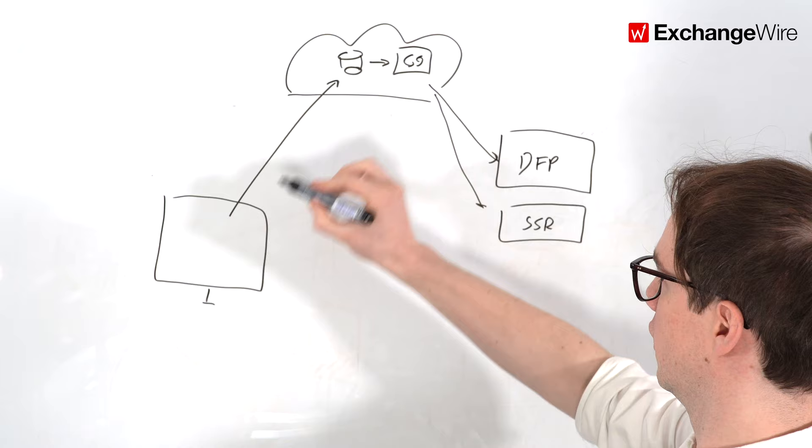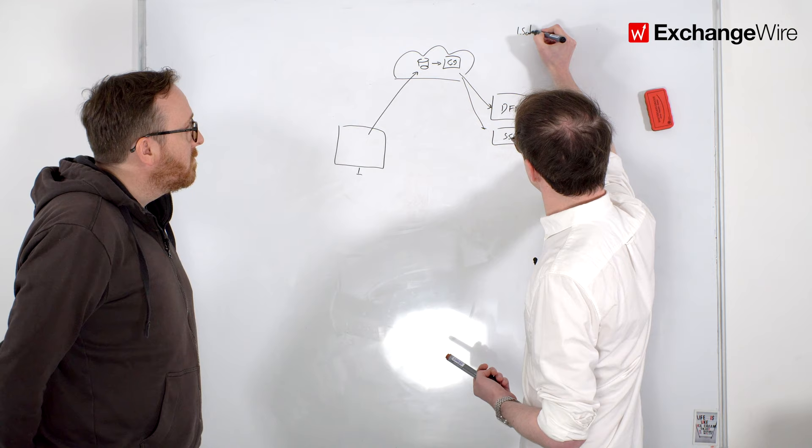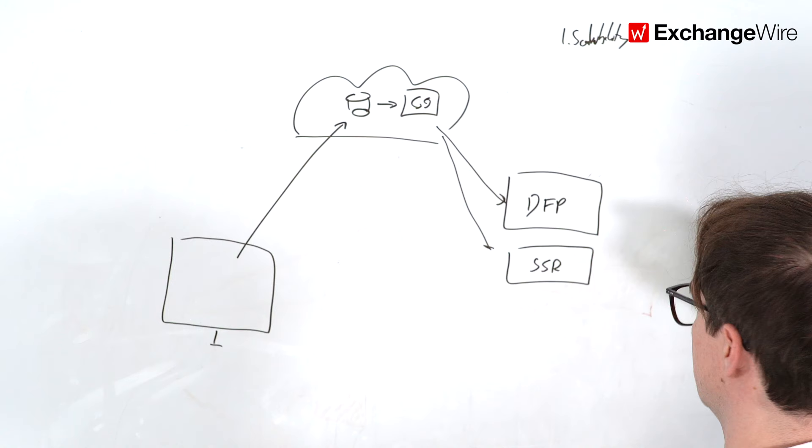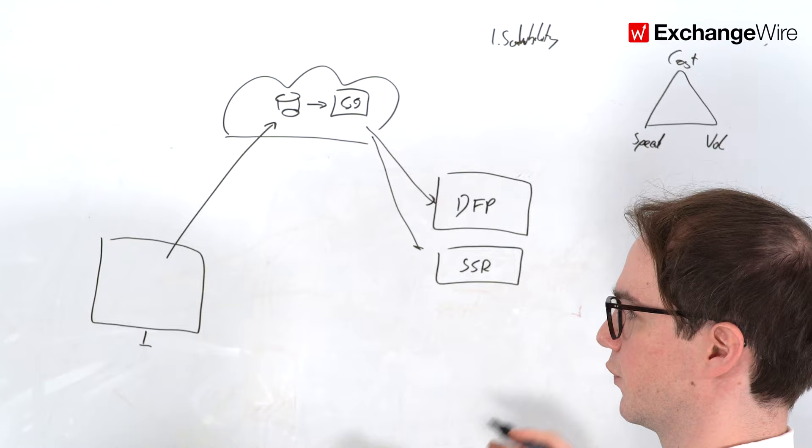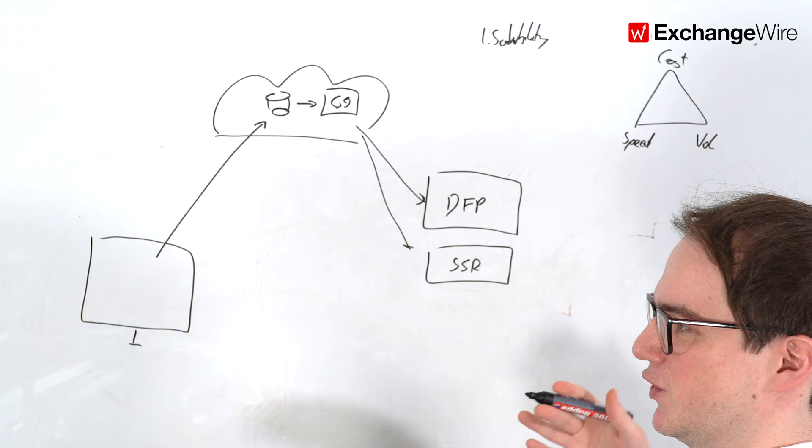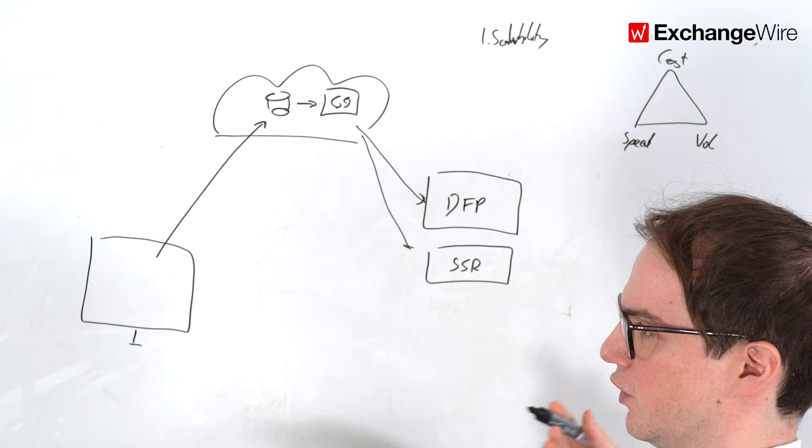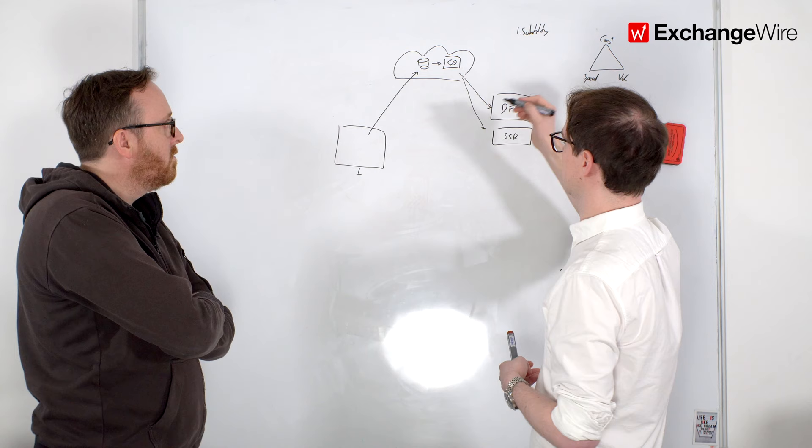So what traditionally happens is that data is being sent from the browser into a cloud where it's stored in a database and then it's also processed in the cloud. And that processing typically happens in batches. So at certain intervals during the day, the cloud goes through all of the data, processes it, buckets users into segments, and then that understanding is pushed into other systems. So for example, into your ad server, let's say DFP or into an SSP.